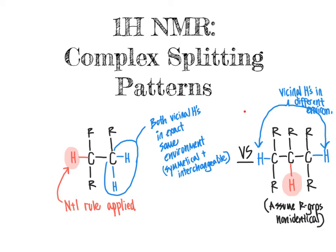Also, it assumes these two hydrogens are indeed in exactly the same environment. If instead we had a carbon-carbon double bond or a ring, that would lock these hydrogens into different chemical environments — they would no longer be symmetrical or interchangeable, and so the n plus one rule would not completely apply. When we have vicinal hydrogens in different environments, we see more complex splitting patterns, which is what we'll get into in this video.